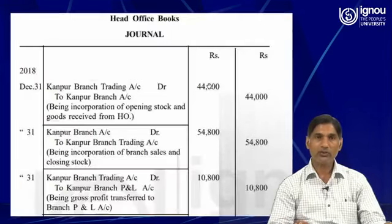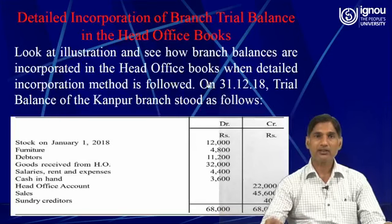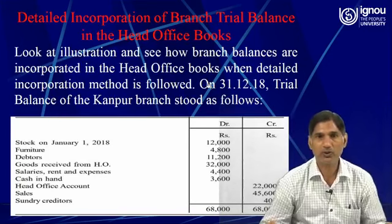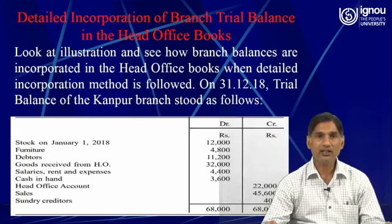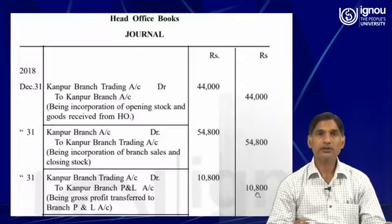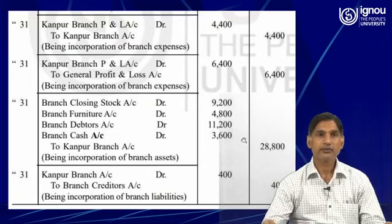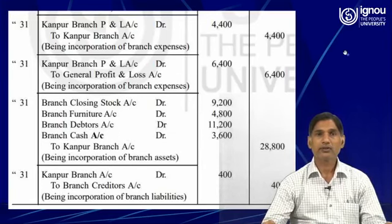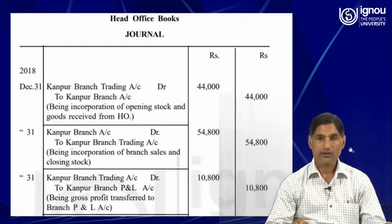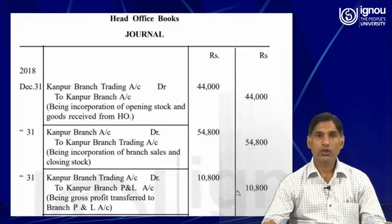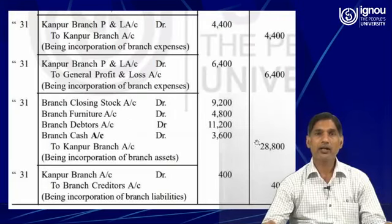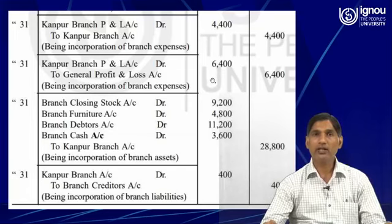Both amounts are given in the trial balance: 6,400 and 4,400. The total amount was 10,400. So this 10,400 has been categorized as 4,400 and 6,400, totaling 10,400.